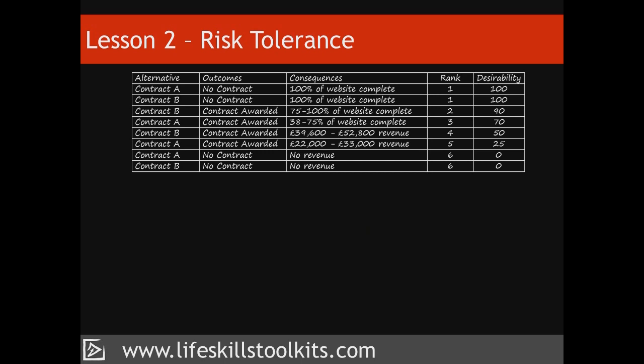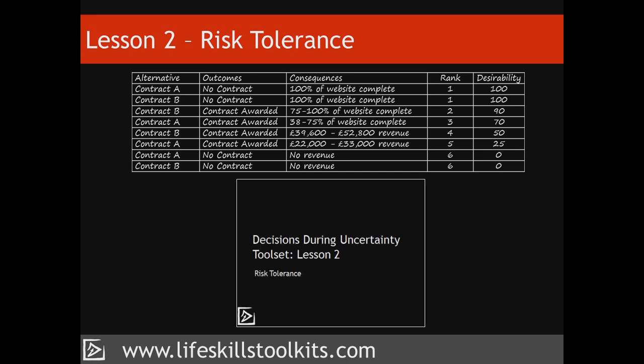Lesson two: Risk Tolerance. Even after creating a risk profile, you may find yourself unable to make a decision. How much you desire the outcomes of your decision in the light of their chances of occurring will help you to decide what you want to do. This lesson will describe how to separate the more desirable consequences from the poorer consequences of a decision, and based on their probability of occurring, identify the most attractive alternative.